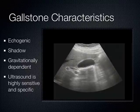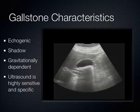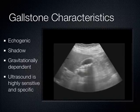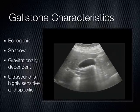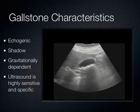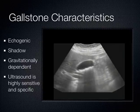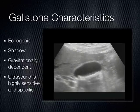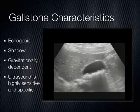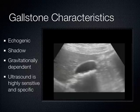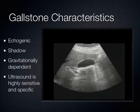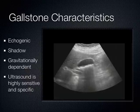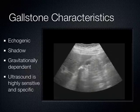Gallstones themselves are cool because they're very echogenic — they're dense structures. When sound encounters them, the sound gets attenuated and reflects back, resulting in a shadow. So gallstones shadow, and they're gravitationally dependent — as you move the patient around, the gallstones move around. For these reasons, ultrasound has very good test characteristics for gallstones, better than CT scan. A CT scan could miss the gallstone altogether with the cut — that happens very frequently. So ultrasound here is really the gold standard.